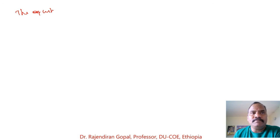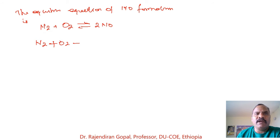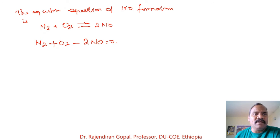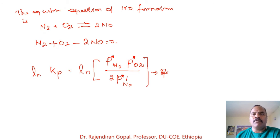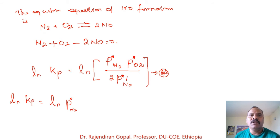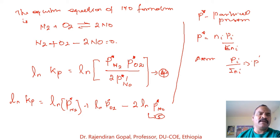We know the equilibrium reaction for NO formation is: N2 + O2 ⇌ 2NO, or equivalently N2 + O2 − 2NO = 0. The equilibrium constant expression is: ln Kp = ln(P* of N2) + ln(P* of O2) − 2 ln(P* of NO), where P* denotes partial pressure in bar.